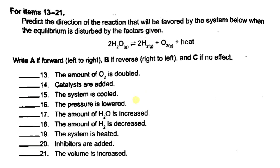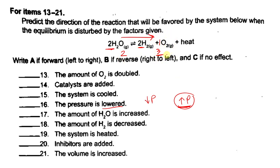Number 16: the pressure is lowered. The stress here is decreasing pressure, so the equilibrium will try to make more pressure. Pressure depends on the number of particles — we count in moles. On the left side we have 2 moles; on the right side we have 2 plus 1, so 3 moles. Since 3 moles creates more pressure, the equilibrium shifts left to right. The answer is A — forward reaction.